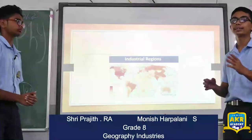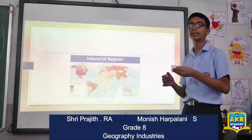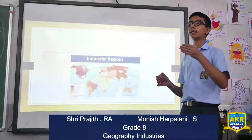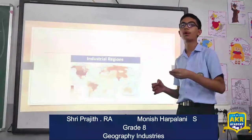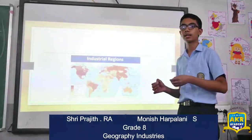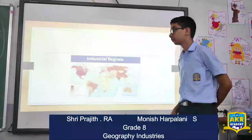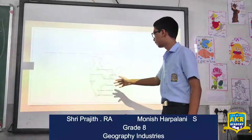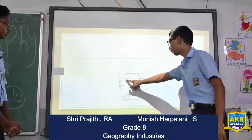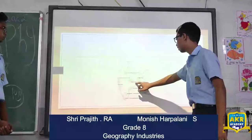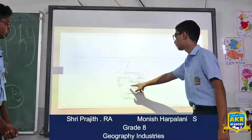Industrial regions are places where companies are located close to each other because they have a continuous supply of raw materials, adequate power and water resources, and communication and transportation facilities near metropolitan cities. These are the industrial regions located in India: Gurugram-Delhi-Meerut Belt, Ahmedabad-Vadodara Belt, Hooghly Belt, Chota Nagpur Plateau Region, Visakhapatnam-Burdwan Region, Bangalore-Tamil Nadu Belt, Kollam-Thiruvananthapuram Belt, and Pune.